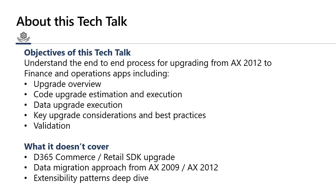We also want to share tips and best practices for validating the code and data once ready for UAT, and how to be successful with a go-live. Although we are talking about Finance and Operations apps, we are focused more on Dynamics 365 Finance and Supply Chain Management. We will cover the HQ part of Dynamics 365 Commerce, but we are not focused on the retail SDK or point of sale upgrade. We are also not covering data migration from AX 2009 or 2012, and we will not be going into a deep dive for extensibility patterns.